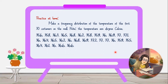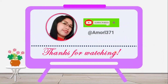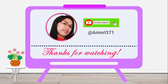For more practice, here is your homework: make a frequency distribution of the temperature of the first 30 customers in the month. These are the following values — good luck! If you find this video helpful, please give it a thumbs up. Click the subscribe button and hit the notification bell to stay updated for new uploads. Thanks for watching.